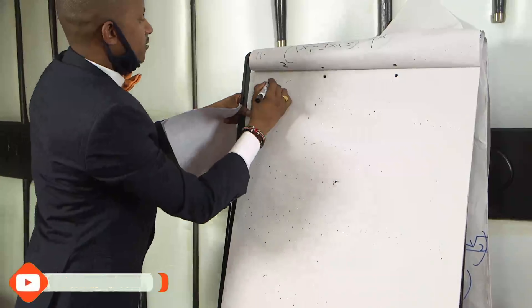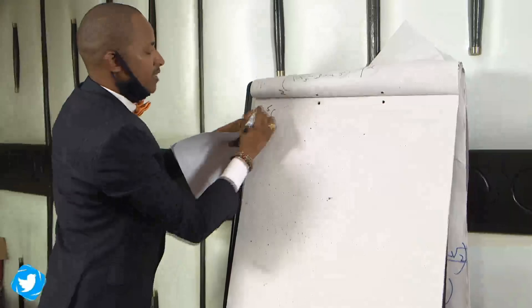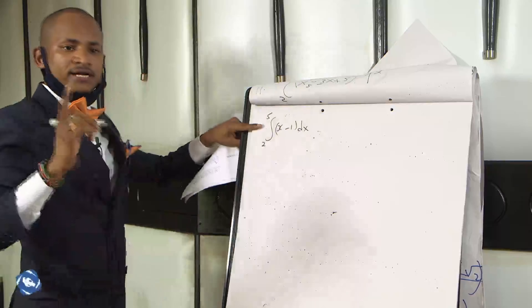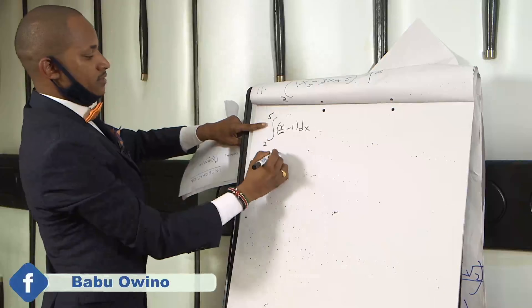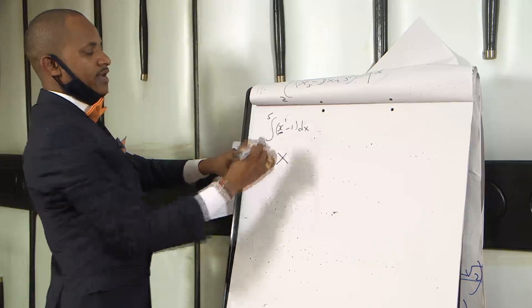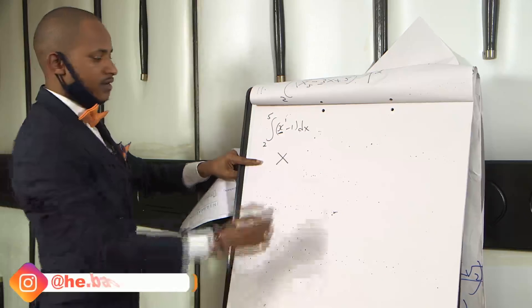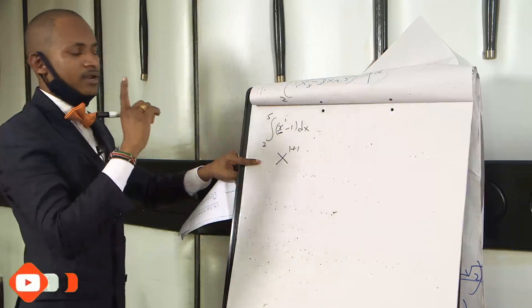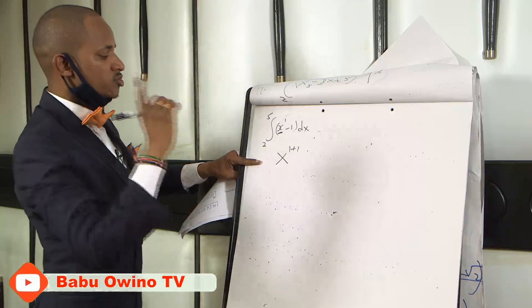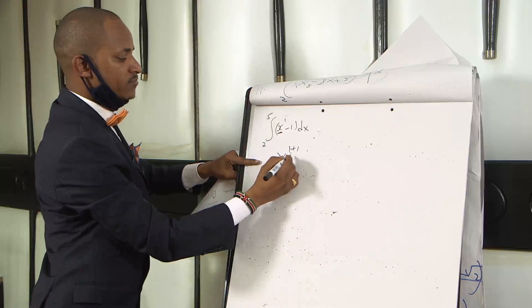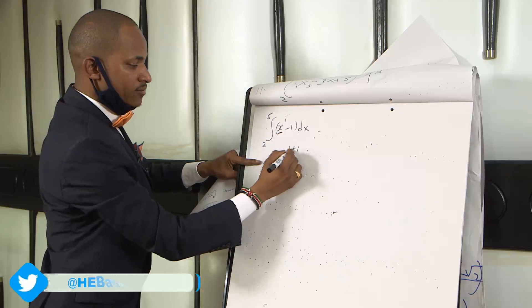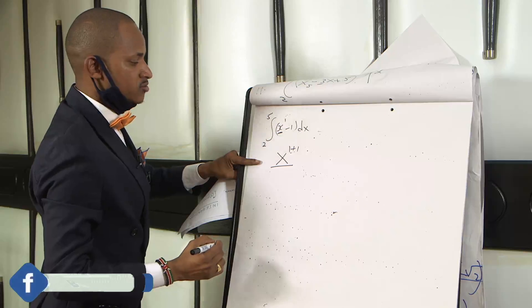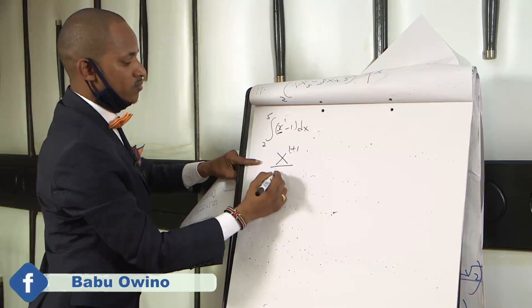So we are integrating with the limits: upper limit is 5, lower limit is 2, of x minus 1 dx. When you are integrating x, just write x. Then x has a silent power of 1. Add 1 to it. Remember differentiation we were subtracting 1, but integration you add 1. Then what you divide with it: what you add, what you get from the power, you divide with that answer that you get, with the summation of 1 plus 1, that is 2.